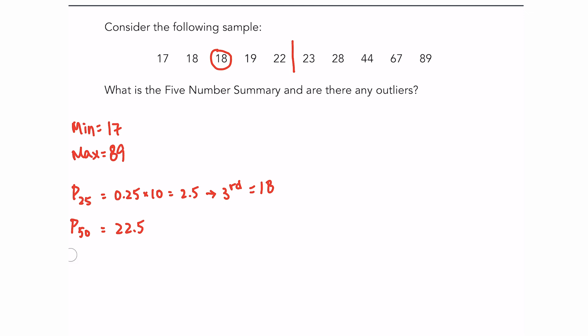And the third quartile, which is the 75th percentile, we're going to take 75, so 0.75, times the sample size which is 7.5, round that and take the next value. So the eighth value in the sample is the 75th percentile, also the third quartile. In this case that is 44. So we have our five number summary: 17, 18, 22.5, 44, and then 89 for the maximum.